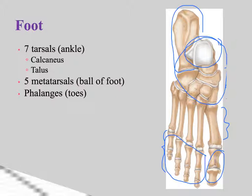The toes are numbered starting with the big toe as digit one. Four toes have three phalanges and the big toe has two, just like the thumb. Phalanges are described with the same directional terms — proximal, middle, and distal — as used for the hand.